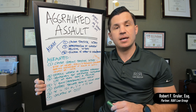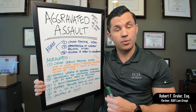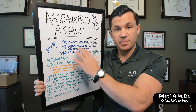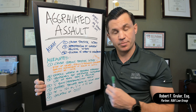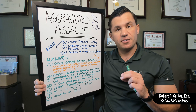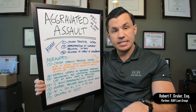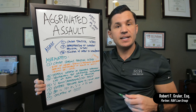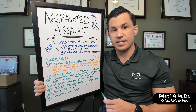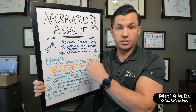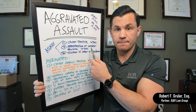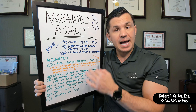Number four is when the victim is bound or substantially restrained so that they cannot resist. If a person is tied up or locked in a position where they can't fight back, escape, or get away, that elevates it to aggravated assault. Number five is when a person enters a private residence or a location where they're not supposed to be with intent to commit the assault. The law protects the home — entering a residence with intent to commit an assault is not a simple assault, it's aggravated, because the person made a deliberate volitional act to enter.